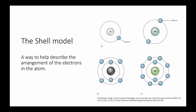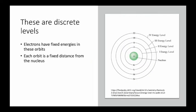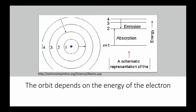The model we're going to look at today is called the shell model. It's a way to help describe the arrangements of electrons in the atom. In this model, electrons orbit the nucleus in circular orbits. These orbits are discrete levels. The electrons in them have fixed energies, and each orbit is a fixed distance from the nucleus. The orbit depends on the energy of the electron.